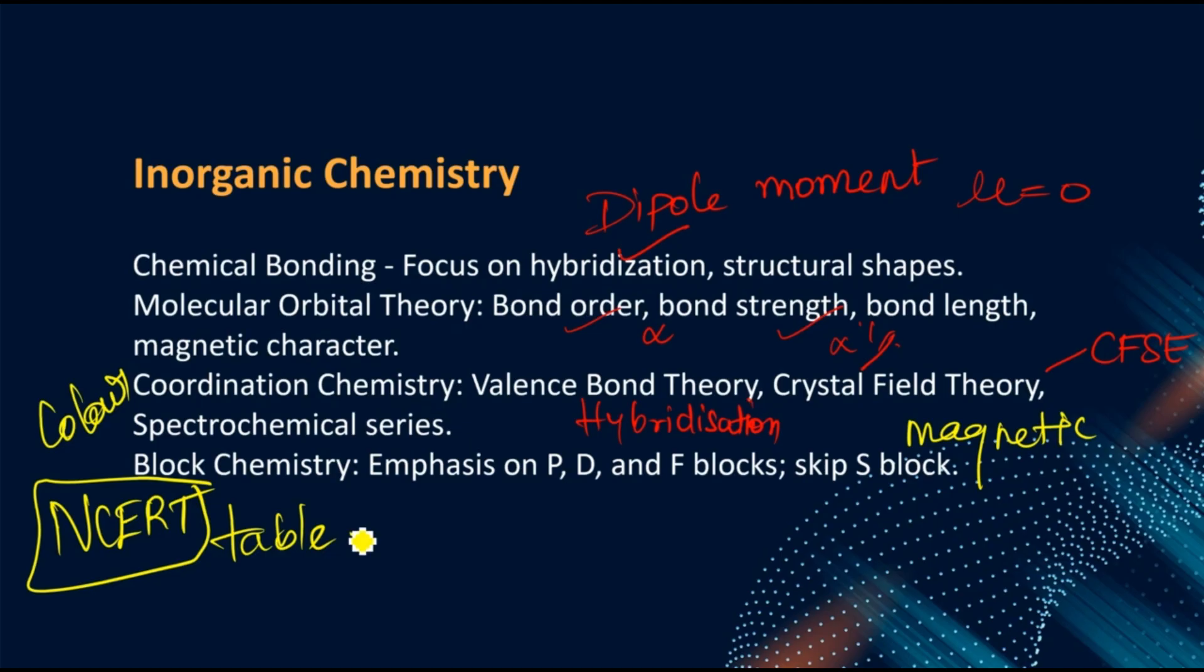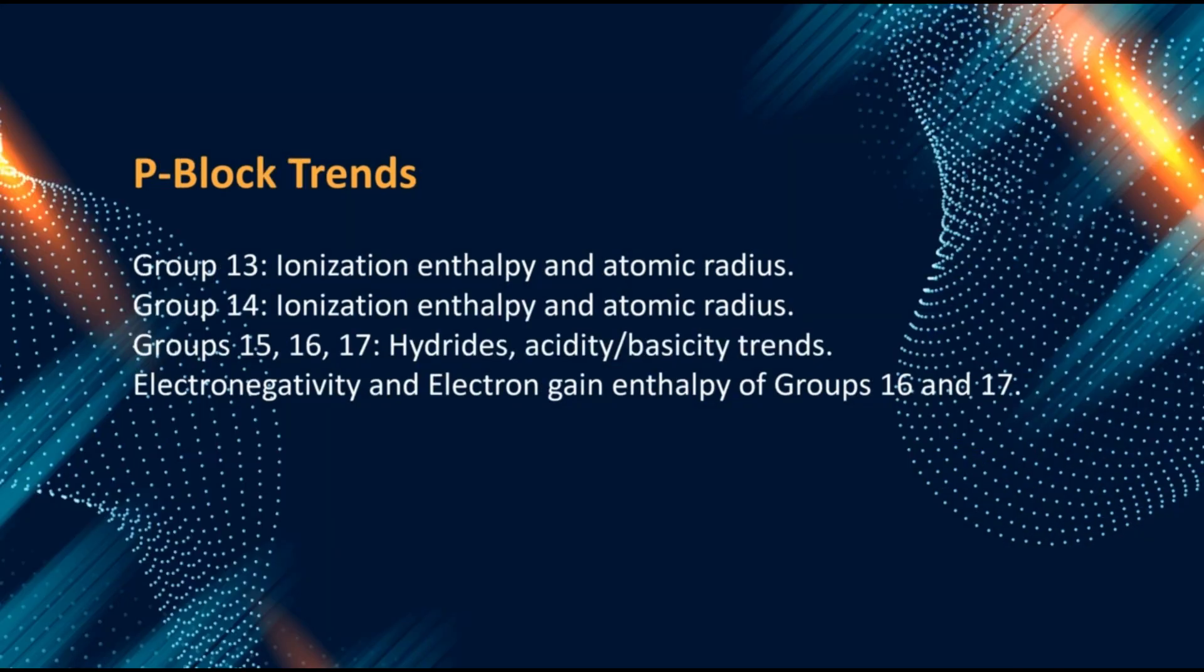Block chemistry - in case of P, D and F block, don't do S block elements. Don't do S block elements expecting out of syllabus questions. Just do P, D and F block elements. In P block elements, we are going to focus on ionization enthalpy and atomic or ionic radius. Similarly group 14 - ionization enthalpy, ionic or atomic radius. In group 15, concentrate on hydrides, their thermal stability, acidity and basicity, melting and boiling point trends. Electronegativity and electron gain enthalpies of group 16 and 17.